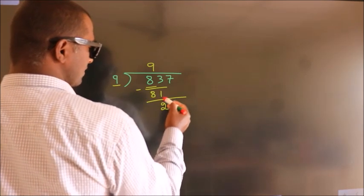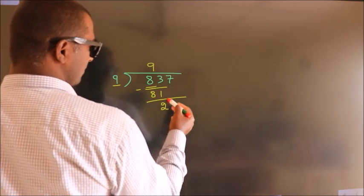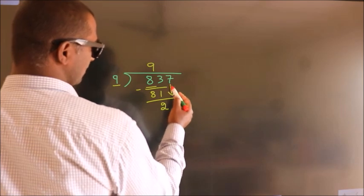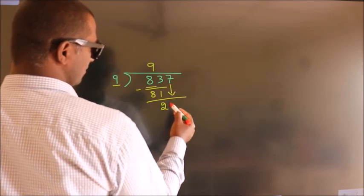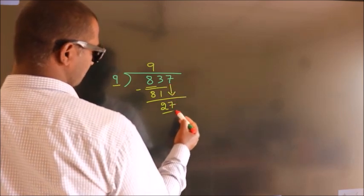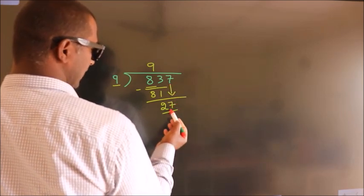After this, we bring down the beside number. So 7 comes down, giving us 27.